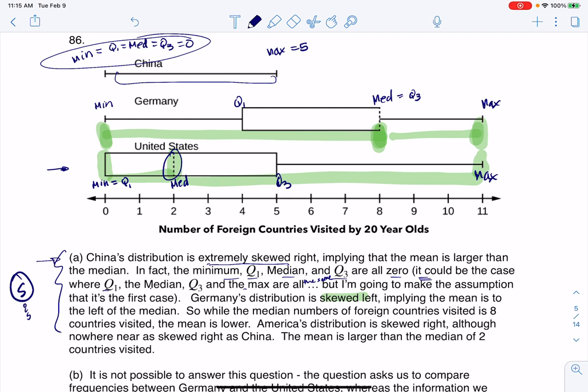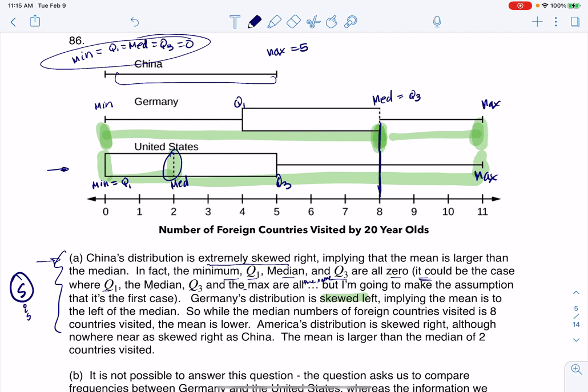Now, for B, it says, have more Americans or more Germans surveyed been to over eight foreign countries? So now let's look at eight. If we look at eight here, all I know is that 50% for Germany have gone to eight or more countries, and I could say less than 25%. And I say less than 25%, because from Q3 to the max, that actually is 25%, and I'm not going that entire distance. So where over half of Germany, or the Germany students that were surveyed, over half of them went to eight or more countries. I know less than 25% of, and I shouldn't say students, I think these were just 20-year-olds. I know less than 25% of the U.S. folks had done that.